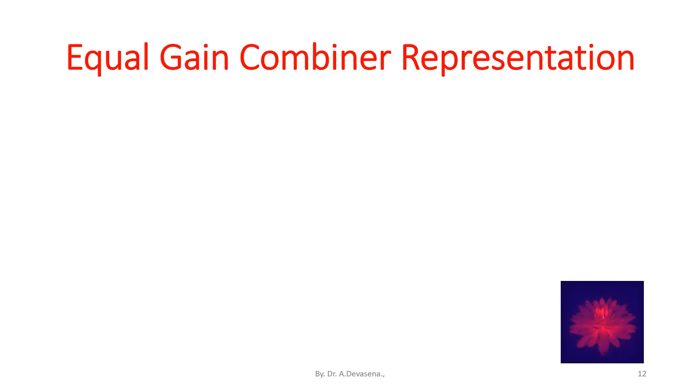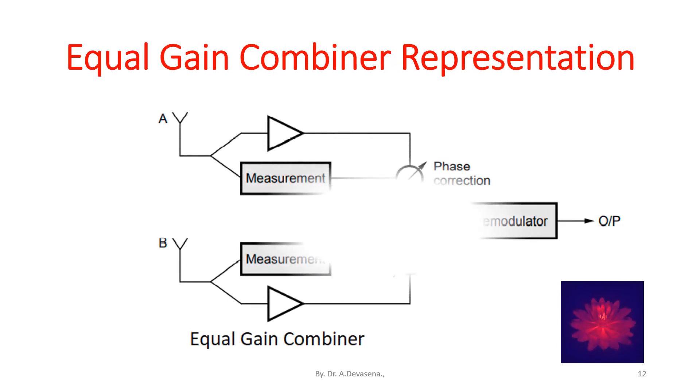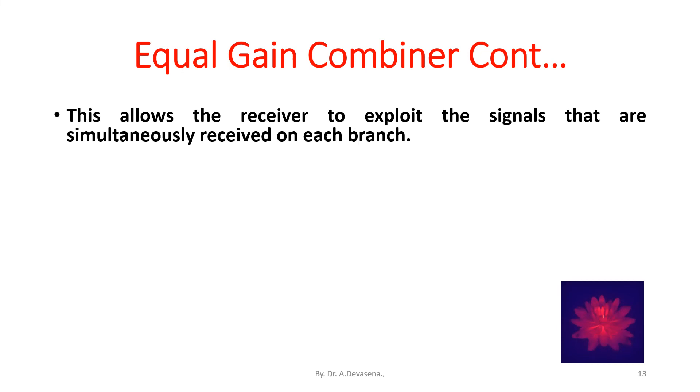Equal gain combiner representation is shown in this diagram. This allows the receiver to exploit the signals that are simultaneously received on each branch.